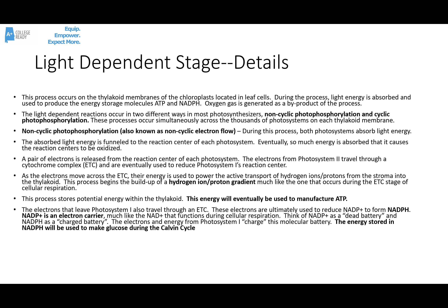Non-cyclic photophosphorylation, sometimes also called non-cyclic electron flow: both photosystems absorb light energy. The absorbed light is funneled to the reaction center of each photosystem. Eventually, enough energy causes the reaction centers to become oxidized — to lose a pair of electrons — and these electrons start to move across the ETC. The electrons from photosystem 2 move across an ETC to photosystem 1. The electrons from photosystem 1 travel through a cytochrome complex and are eventually used to reduce NADP+ to make NADPH, an energy storage molecule.